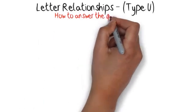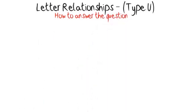How to answer the question: The best way to work out the answer to these questions is to find the rule between the first two pairs of letters, and then once you know the rule, you can use it to find the missing letters from the second group.